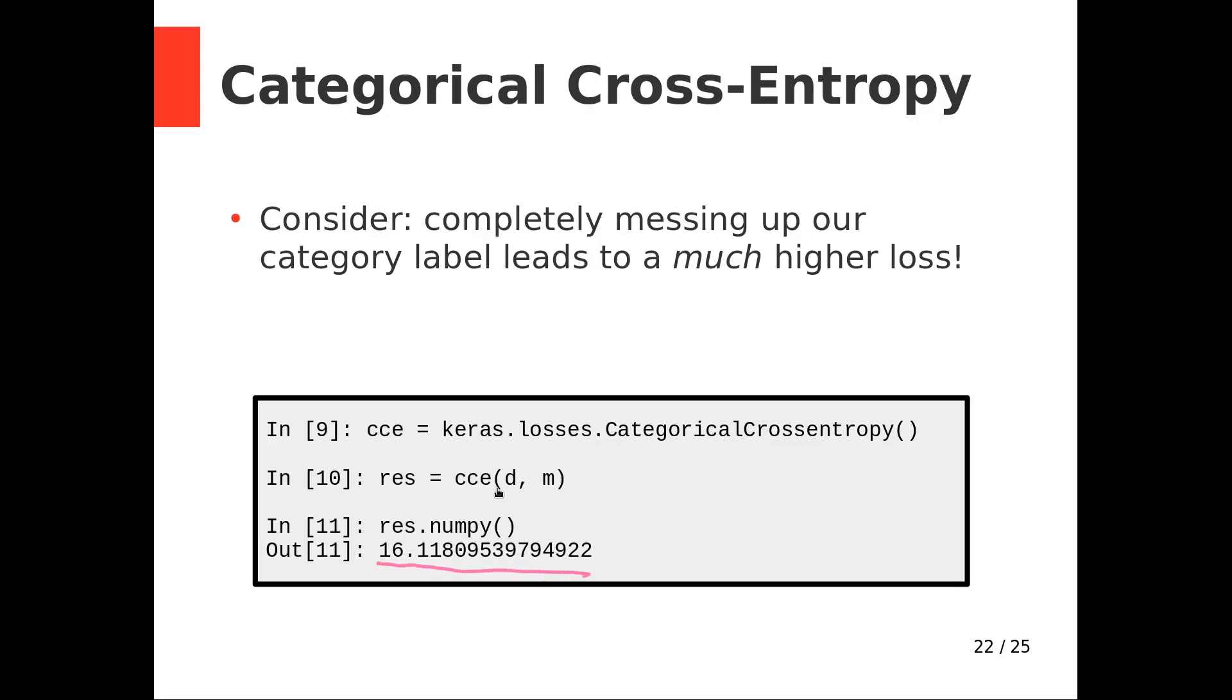So using the same D and the same M that we had before, if we compute the categorical cross-entropy loss, we get the much higher 16.1. Which makes a lot of sense if this thing is useful for classification problems. If we 100% pick the wrong class, we want the loss to be big, and the categorical cross-entropy does that.